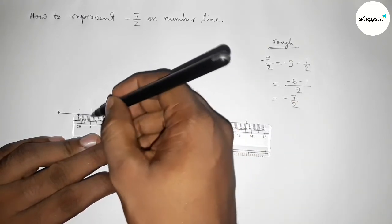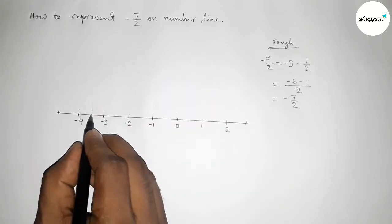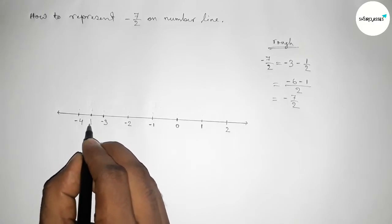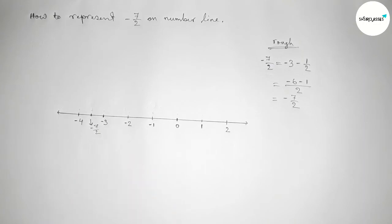Now marking this deeply, and this is minus 7 by 2 on the number line. Now taking here a point O and here P.